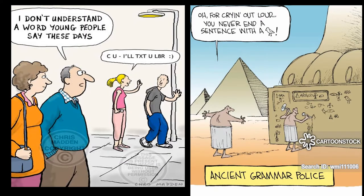Here are a couple of funny cartoons that remind us that language is made up of words and rules, or grammar. On the left, we have older people saying they don't understand what young people say, because the young people are speaking in text talk. On the right, we have ancient Egyptian hieroglyphics — 'Oh for crying out loud, you never end a sentence with a bird symbol.' That's the ancient grammar police. So languages: words and rules.